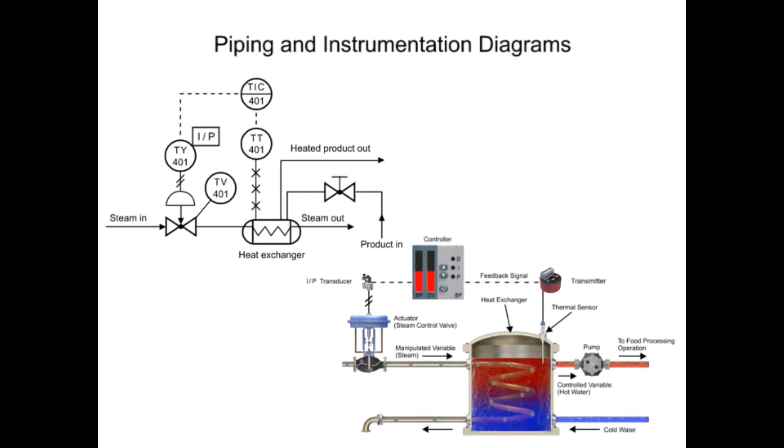The instrument connected to the heat exchanger contains two other types of information. The second letter in the functional identifier indicates it is a transmitter, and the balloon with no line inside its symbol indicates the device is field mounted.